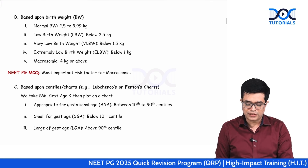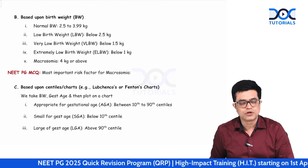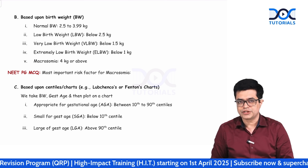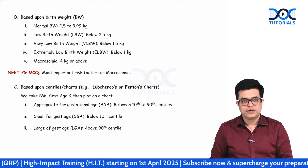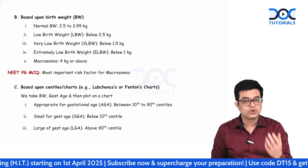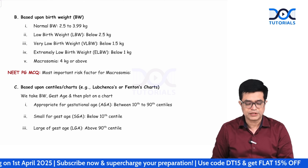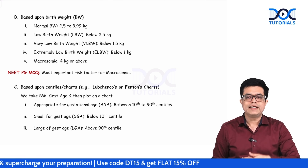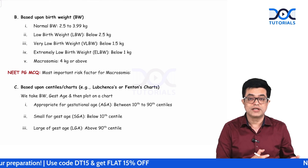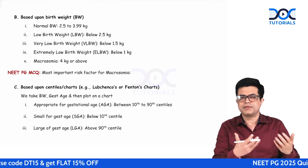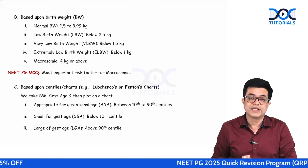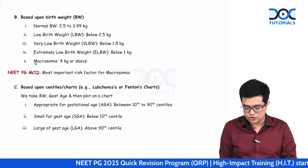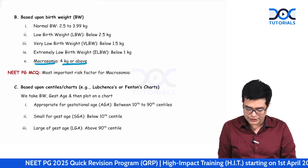The second classification is based upon birth weight. Normal birth weight is 2.5 to 3.99 kg irrespective of gestational age. If birth weight is below 2.5 kg, we call it low birth weight. Below 1.5 kg is very low birth weight. Below 1 kg is extremely low birth weight. And finally, macrosomia is a weight of 4 kg and above.